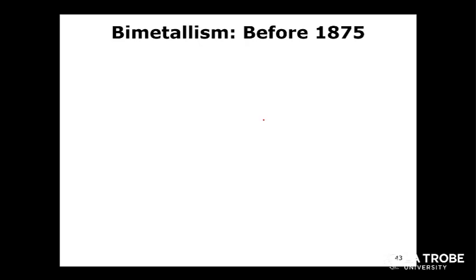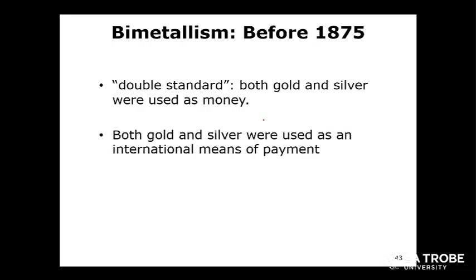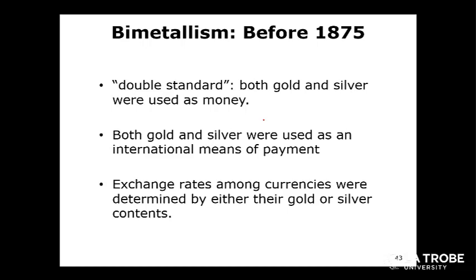The first system we talk about is bimetallism — when we have two different metals in the system that we use as currency. So before 1875, we used to exchange goods and services across borders using both gold and silver. We might issue a $2 coin using gold and a $1 coin using silver. If every country uses gold and silver as their medium of exchange, it's very easy to work out the value of the different currencies. For example, if one Australian dollar equals one gold coin and two US dollars equals one gold coin, we can work out the relative prices between the USD and the Australian dollar.